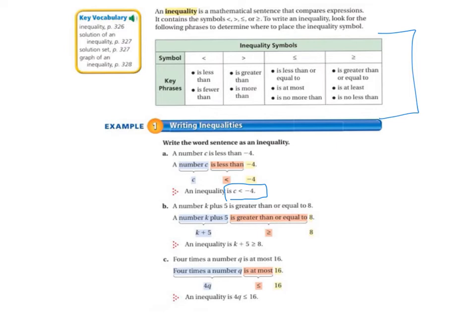Letter B, a number K plus 5 is greater than or equal to 8. So that would look like K plus 5 is greater than or equal to 8.